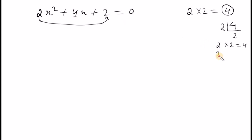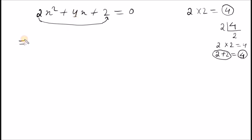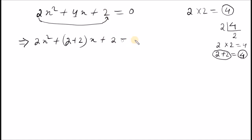This is the middle term. So 2 plus 2 is the same factor — 2 plus 2 is 4. So 4 is exactly the middle term. So 4 is 2 plus 2, which is the middle term. So the middle term is split: the middle term implies 2x plus 2x, which is 2 plus 2, so x plus 2 equals 0.